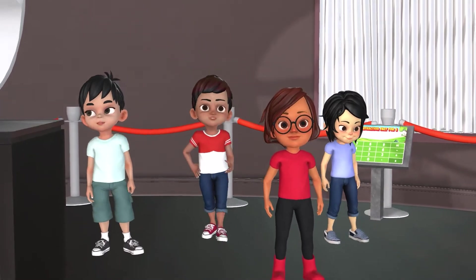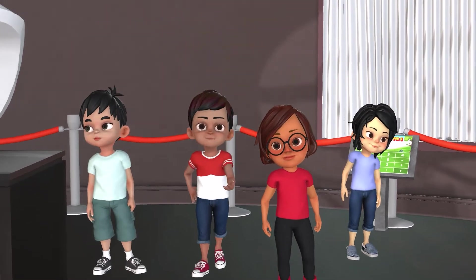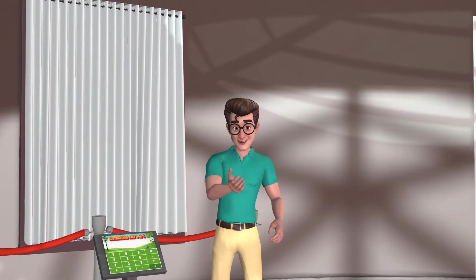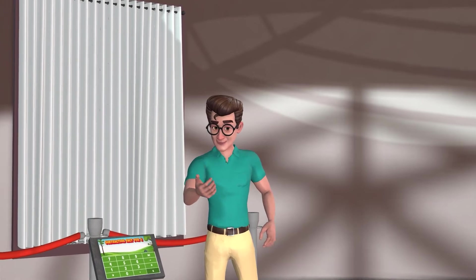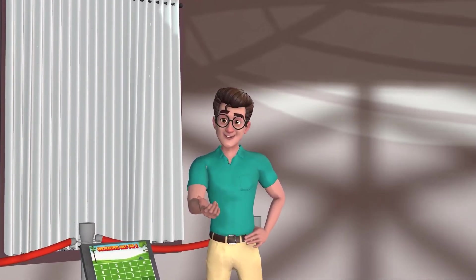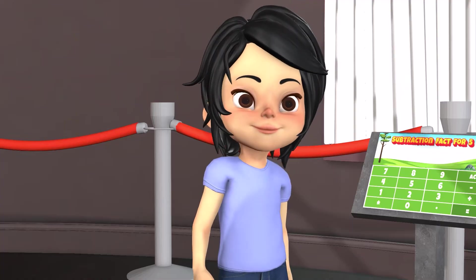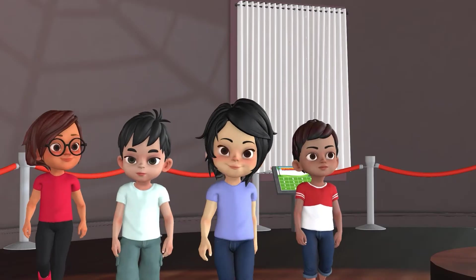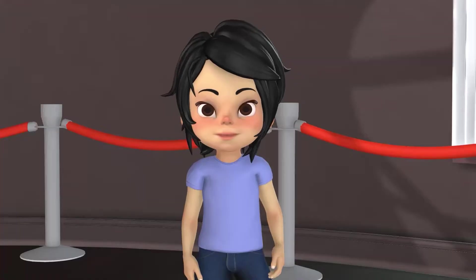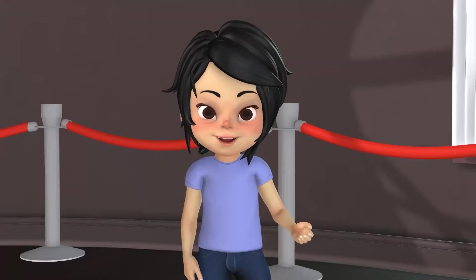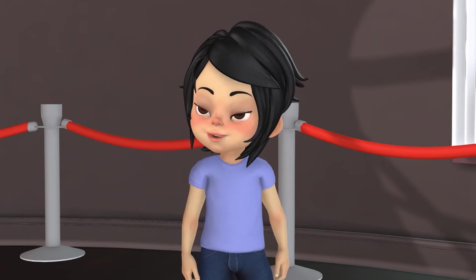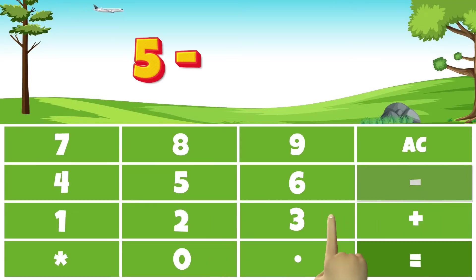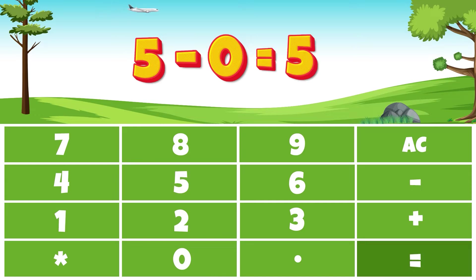What do we have to do to reveal this painting? Write the subtraction facts for the number five. Who wants to try this one? I will, Dr. Bikanachi! We have to start by subtracting zero from five. So, five minus zero equals five.